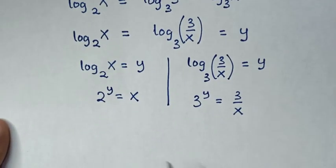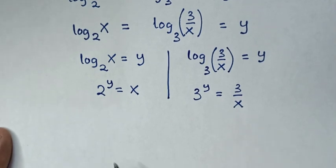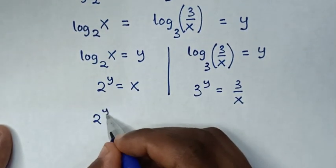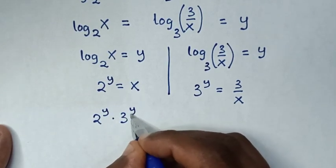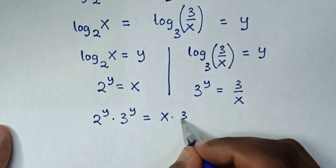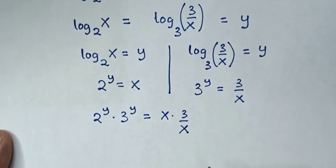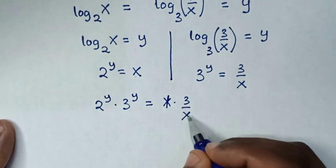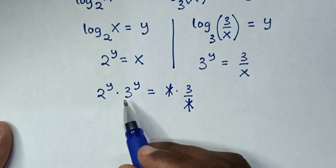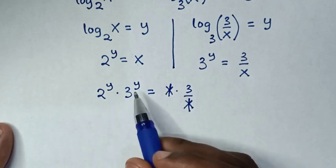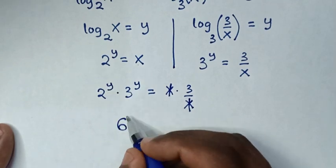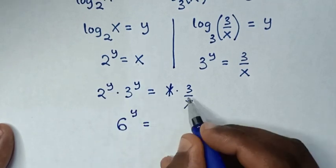In the next step we multiply these two equations. So 2^y times 3^y equals x times (3 over x). The x's cancel, and using the exponent rule with the same power y, it becomes 2 times 3, which is 6, to the power of y equals 3.